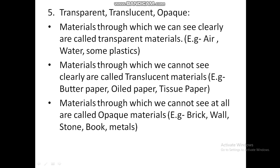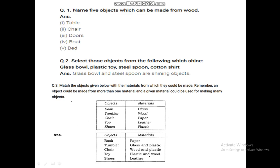Opaque materials are those through which we cannot see at all. Examples: brick, wall, stone, book, metals, etc. Now students, these are the notes related to chapter 4. Copy down these questions and answers in your notebook.